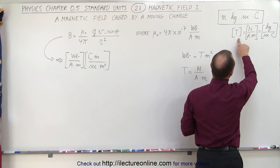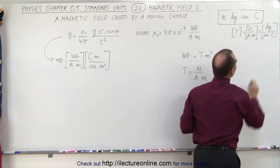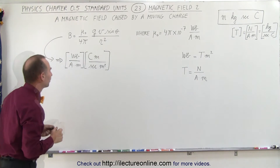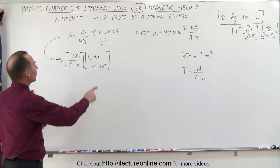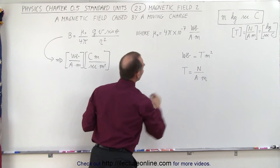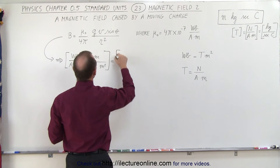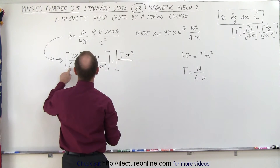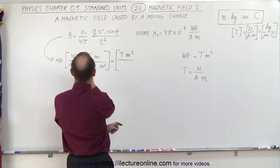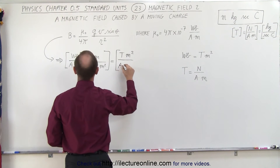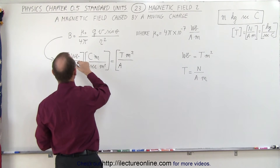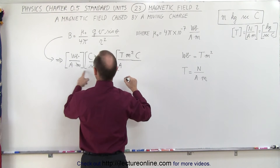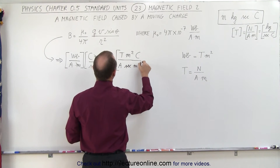Teslas, which are the units for magnetic field, are defined as kilograms per second per coulomb, and we should get the same result here. So let's replace Weber by what Weber is equal to in terms of units: Tesla times meters squared. This can be written as Tesla times meters squared divided by amps times meters. So this meter cancels out that meter. We have coulombs in the numerator, and seconds times meters squared in the denominator.